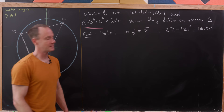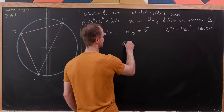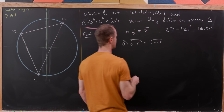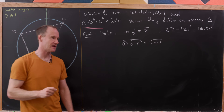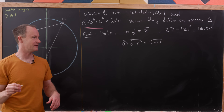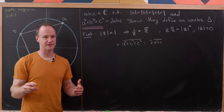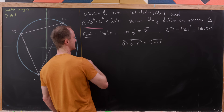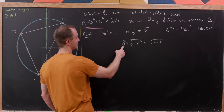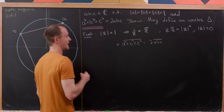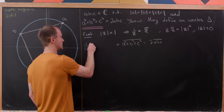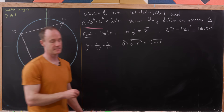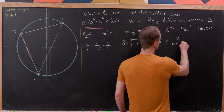If we take the conjugate of this equation, we get something interesting. We write a³ + b³ + c³ conjugated equals 2abc conjugated. Factoring the conjugate through multiplication and addition, and using the fact that the conjugate of a is 1/a, we get 1/a³ + 1/b³ + 1/c³ = 2/(abc).